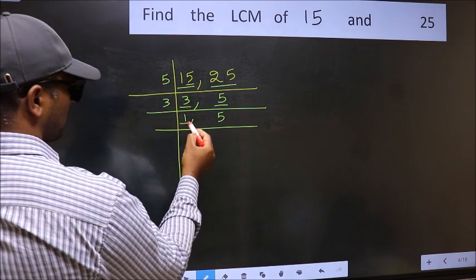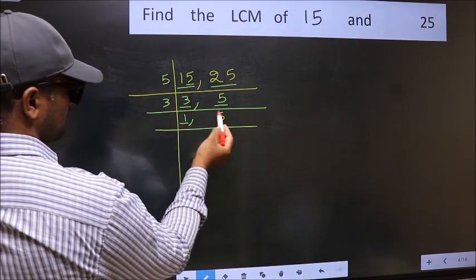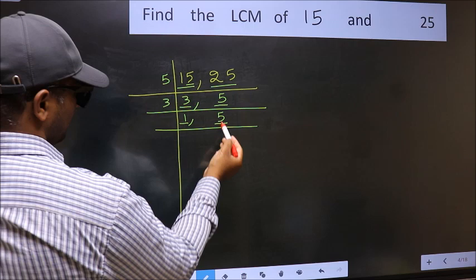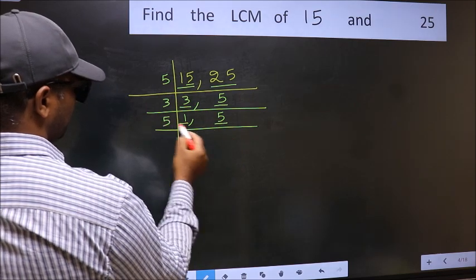Now we got 1 here. So focus on the next number 5. 5 is a prime number, so 5 once is 5.